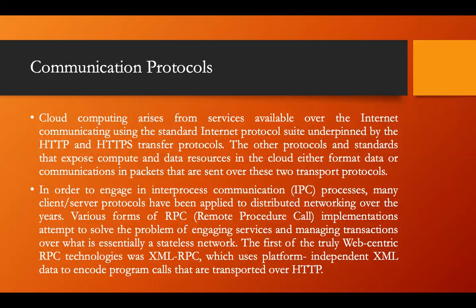For example, if we want to connect to netflix.com, Netflix is hosted on an AWS web server, and we access it via HTTP or HTTPS. Now, the inner services that communicate with each other use an inter-process communication protocol — specifically remote procedure call. The technology used is XML-RPC, that is extensible markup language remote procedure call, which is the internal protocol running over HTTP.